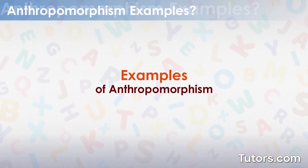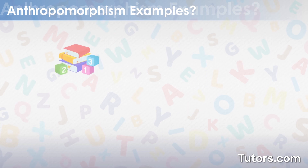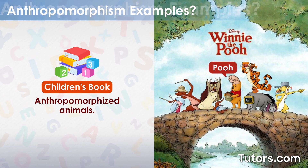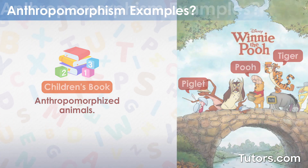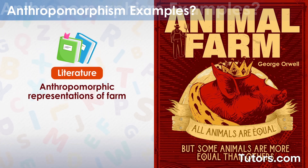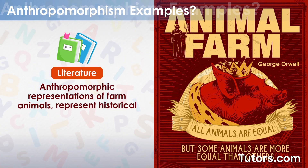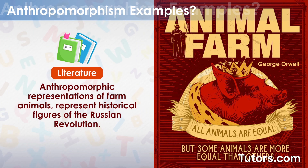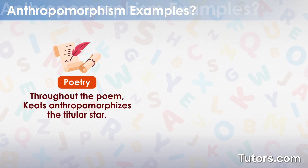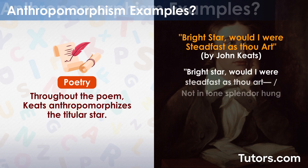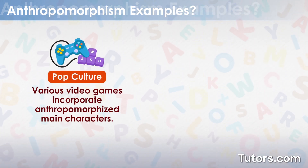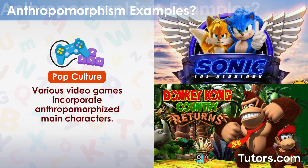Most of the characters in A.A. Milne's Winnie the Pooh are anthropomorphized animals, such as Pooh, Piglet, and Tigger. Orwell utilizes anthropomorphic representation of farm animals to represent various historical figures made prominent by the Russian Revolution in Animal Farm. Poets may use anthropomorphism in poetry, such as John Keats' star in Bright Star, would I were steadfast as thou art. Video games use anthropomorphism too, like characters in Sonic the Hedgehog and Donkey Kong.